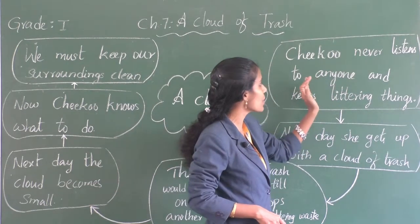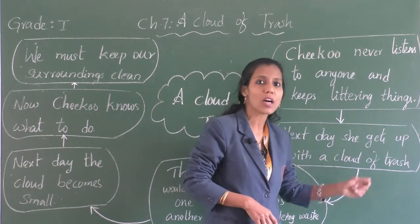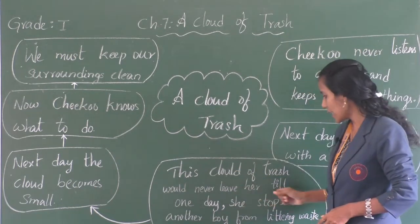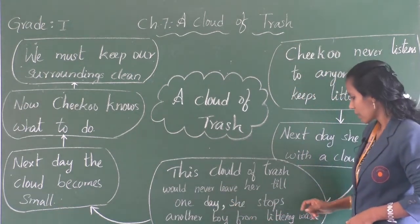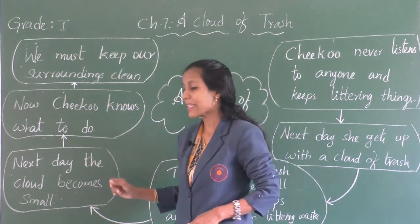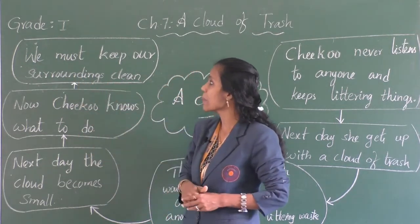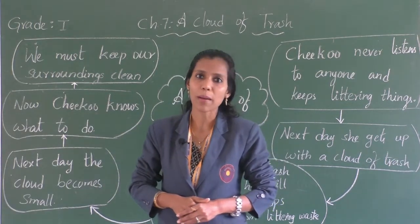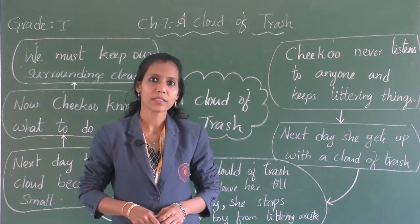Let's start the chapter 'A Cloud of Trash' with the mind map. Here you can see: Chiku never listens to anyone and keeps littering things. Next day she gets up with a cloud of trash. This cloud of trash would never leave her till one day she stops another boy from littering waste. Next day the cloud becomes small. Now Chiku knows what to do — we must keep our surroundings clean.